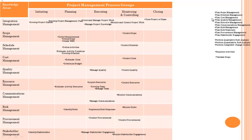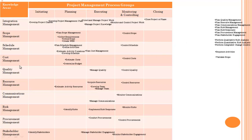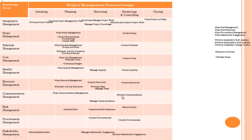Plan scope management — remember, all plans will come under process group planning. Plan scope means it will come under process group planning and knowledge area scope management. Same way: plan schedule management, plan cost management, plan quality management, plan resource management, and plan communication management all come under planning process group in their respective knowledge areas.